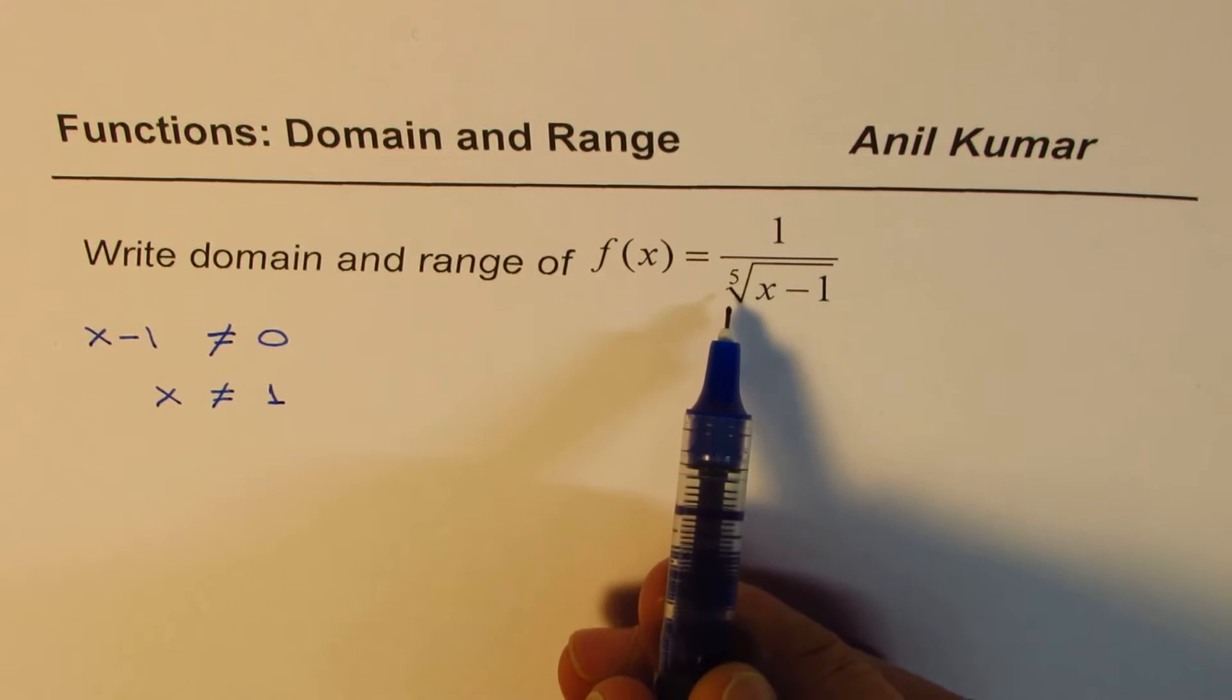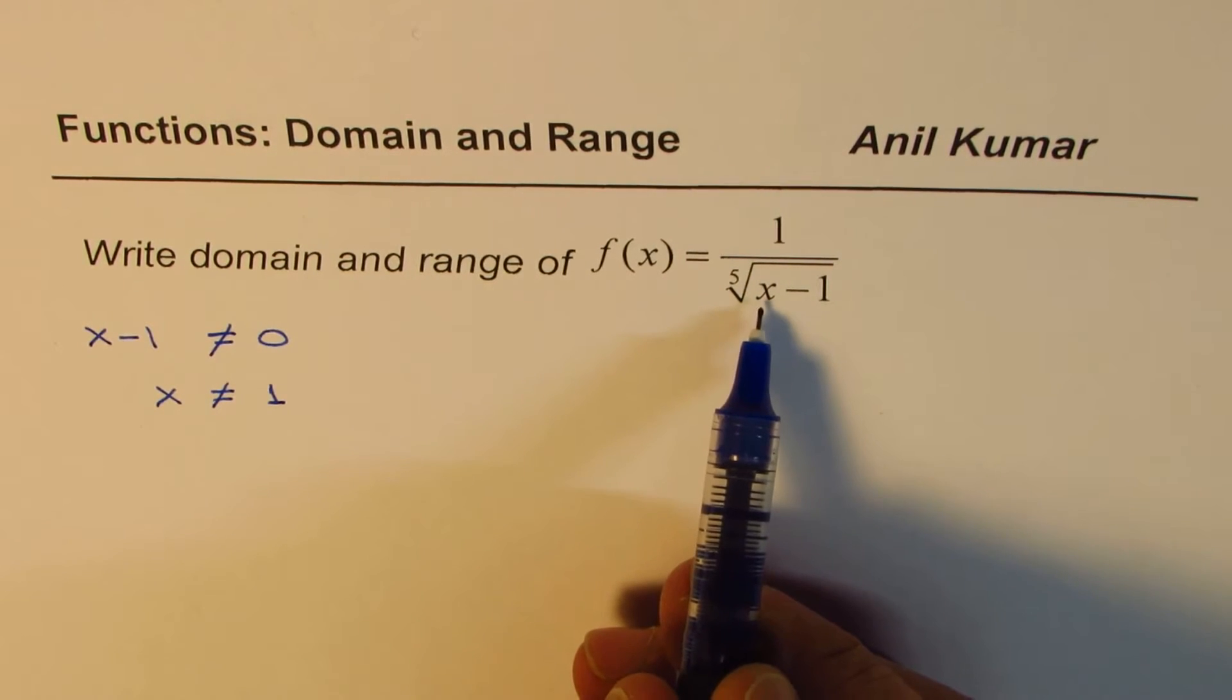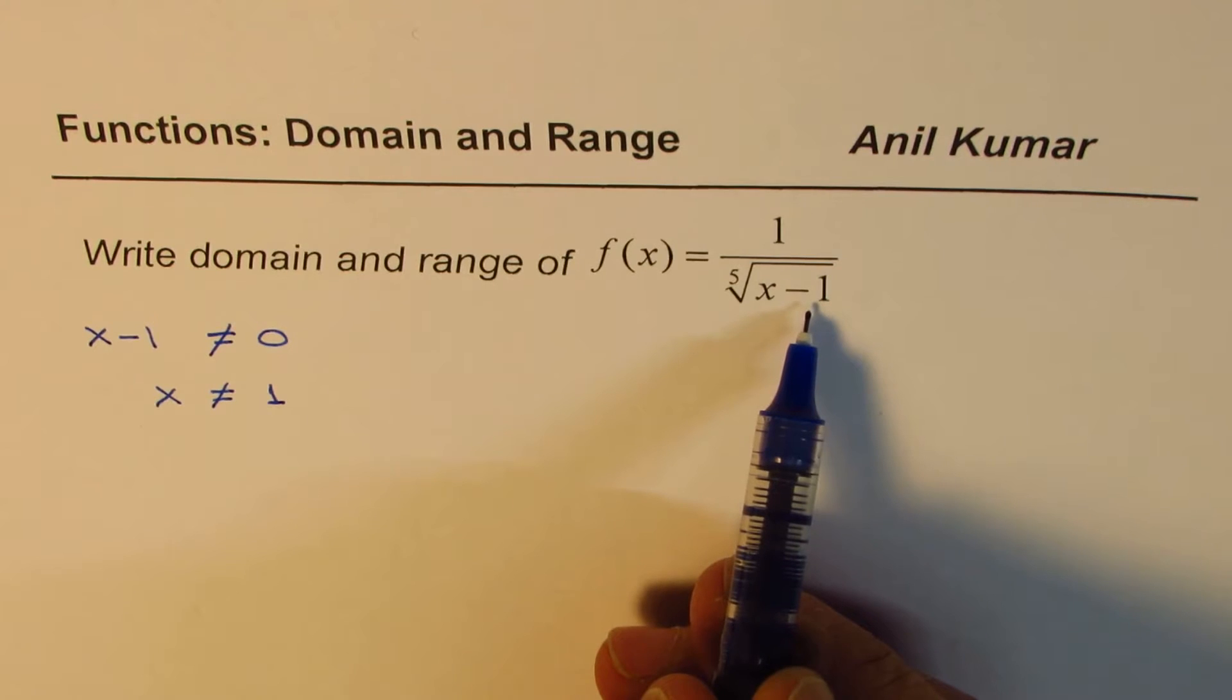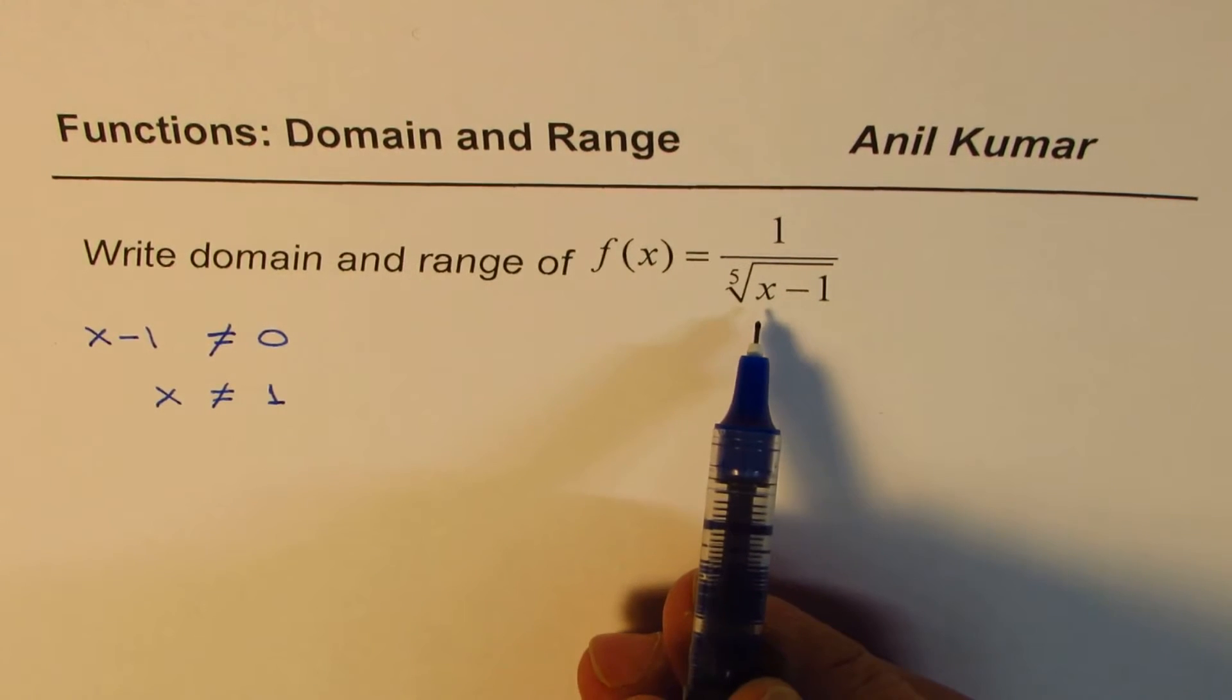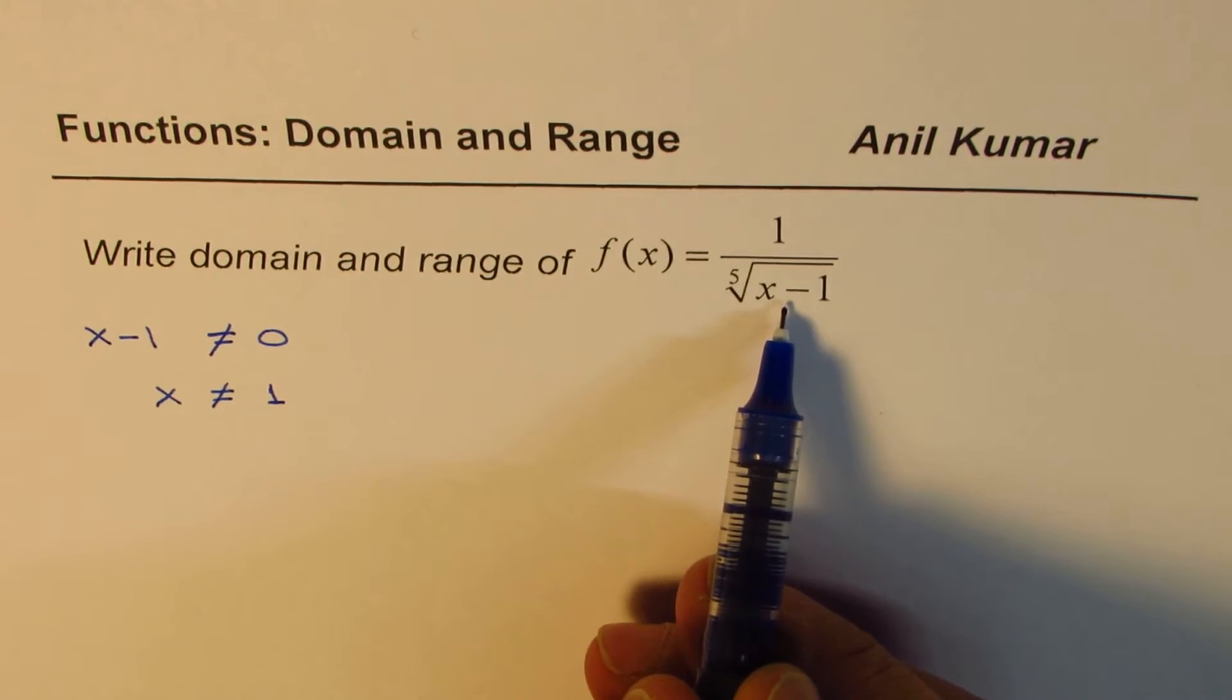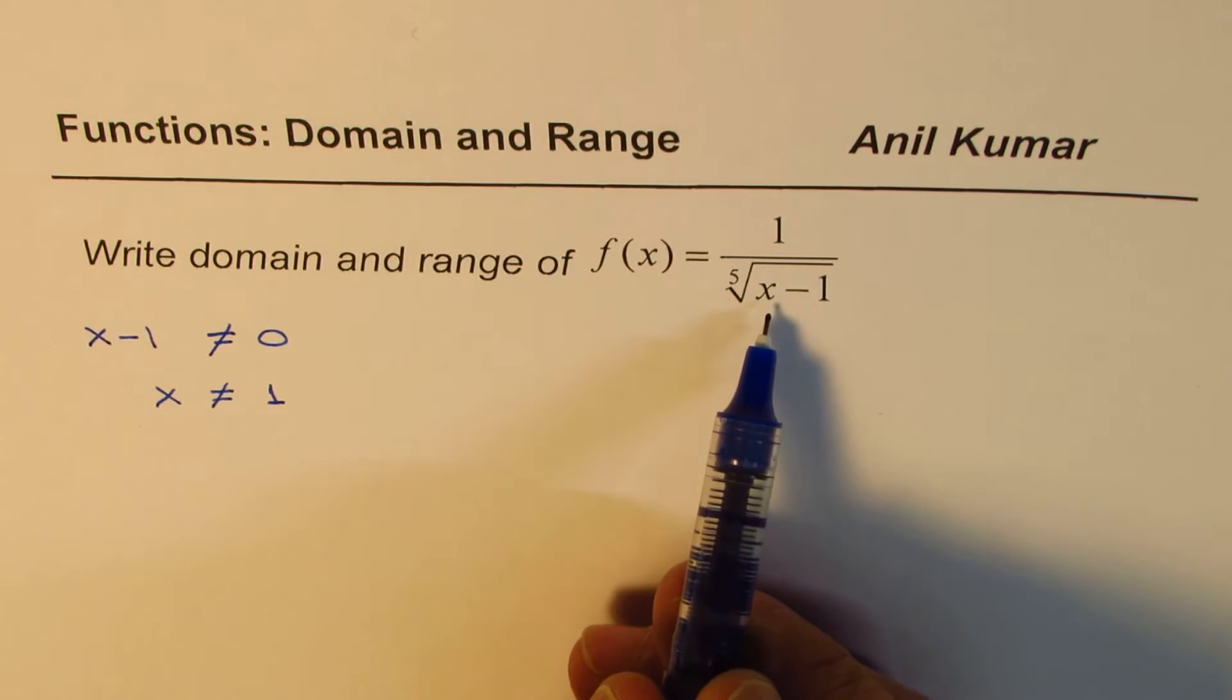Now this is to the 5th root. How about x minus 1 being negative? Well, if you have a negative number, for example, negative 8, 5th root of negative 8 is negative 2. So that is not a restriction.